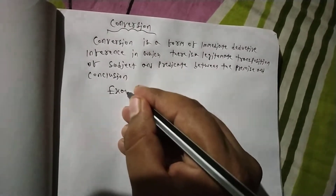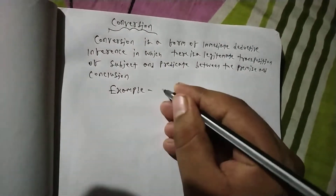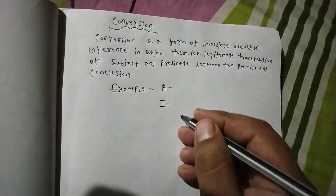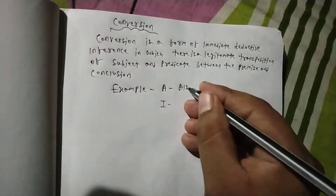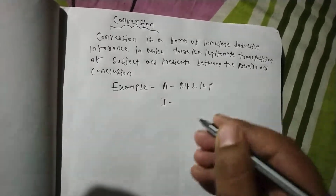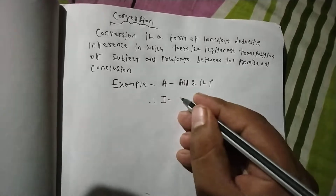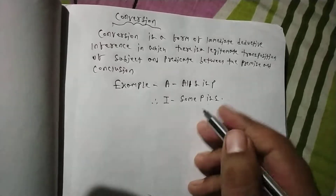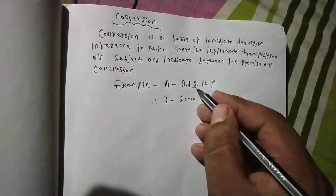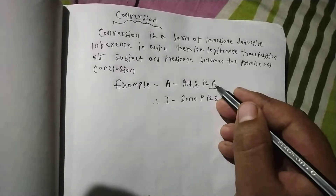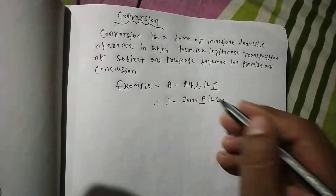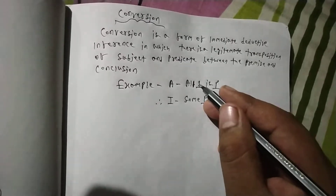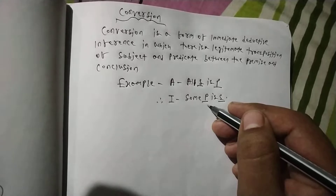For example, the conversion of an A proposition gives an I proposition. The A proposition example is: all S is P. The conversion of this is: some P is S. Here, subject S becomes predicate and predicate P becomes subject — a legitimate transposition between subject and predicate.